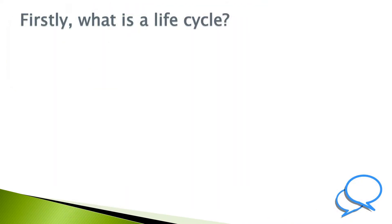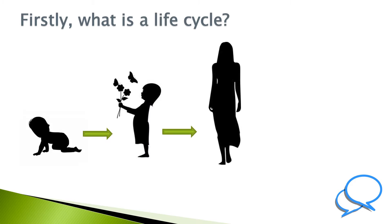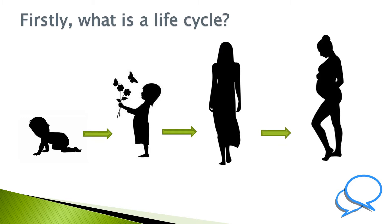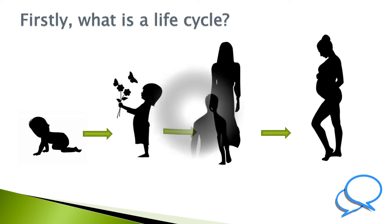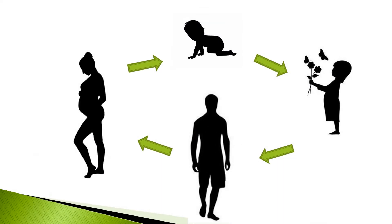Firstly, what is a life cycle? All animals, including humans, are born. They grow and often have children of their own. This is known as a life cycle.